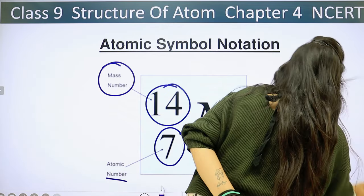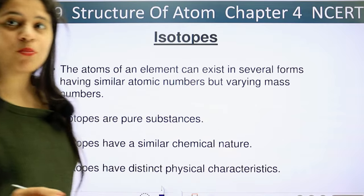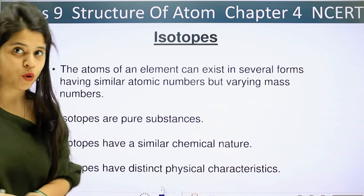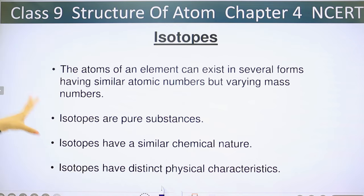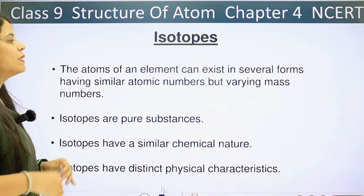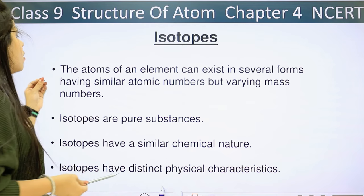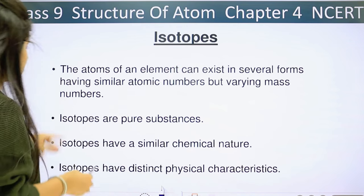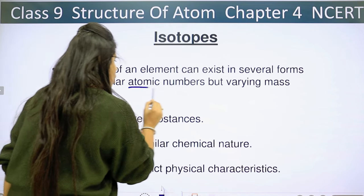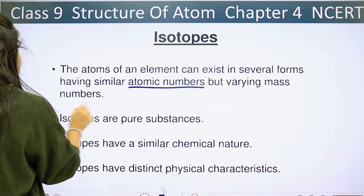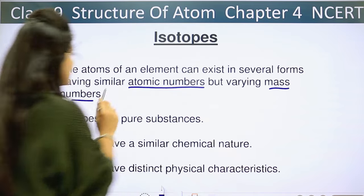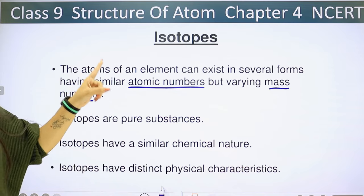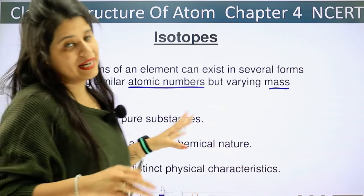Now there is an important thing here. What are isotopes? The atoms of an element can exist in several forms having similar atomic numbers but varying mass numbers. Meaning their atomic number is the same but mass number is different. So these atoms can exist in different forms with the same atomic number but different mass number.